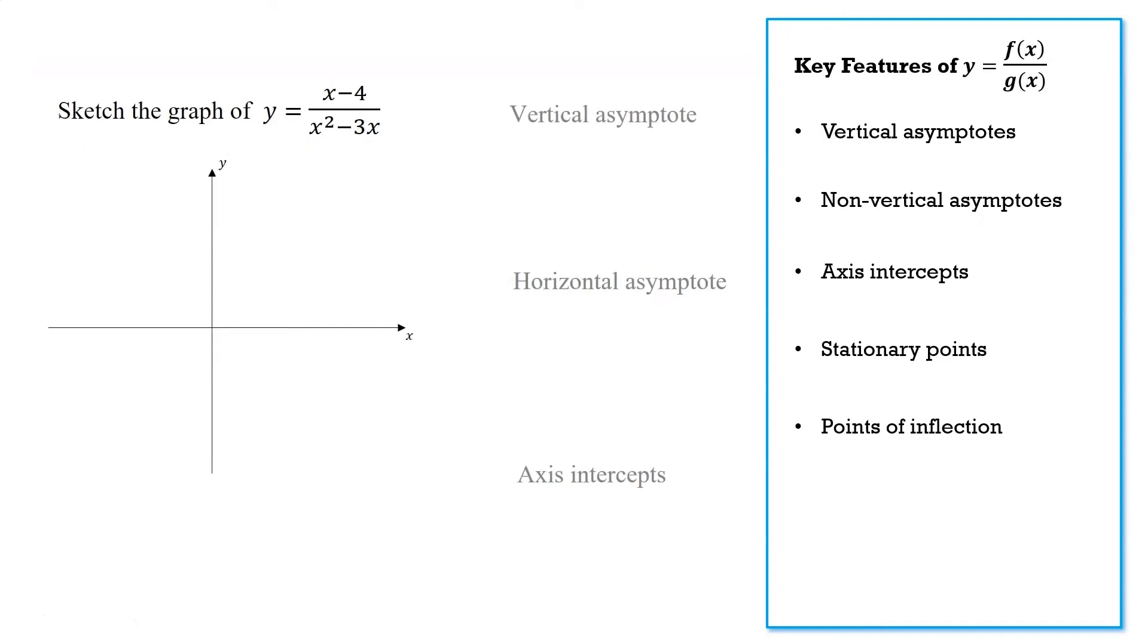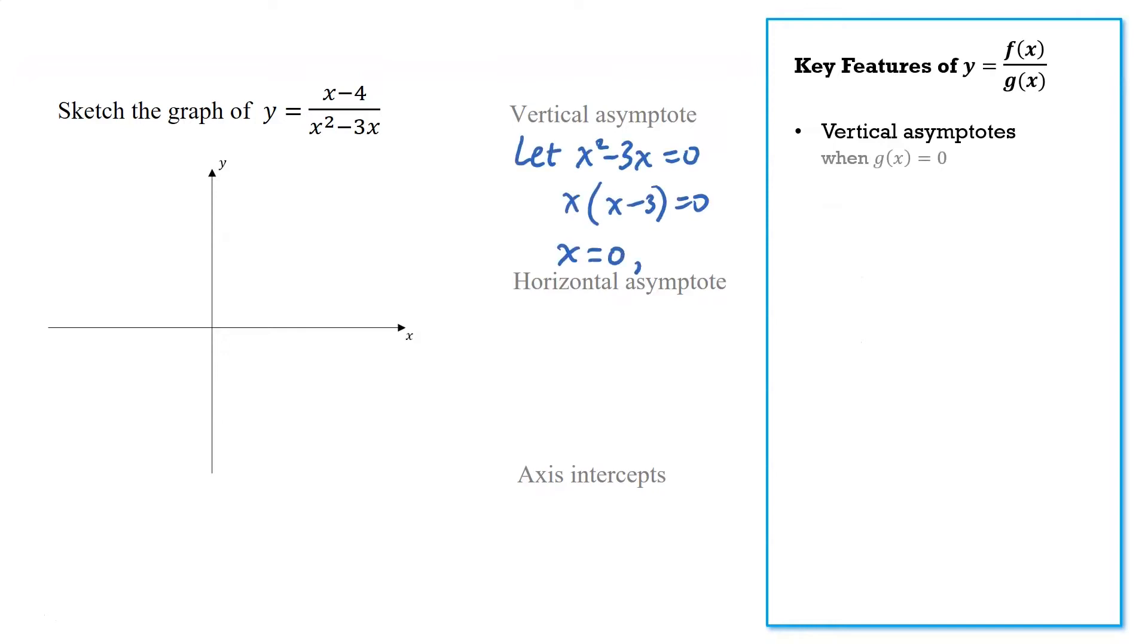So we have a linear function on the top and a quadratic function on the bottom. We want to start by finding our vertical asymptote, and in this case that's going to occur when the denominator is equal to 0. Solving that quadratic on the denominator will give us two solutions, x is 0 and 3, so we'll have two vertical asymptotes for this graph. We should check whether the numerator is also 0 at that point. In this case that's not the case, so we will have two vertical asymptotes.